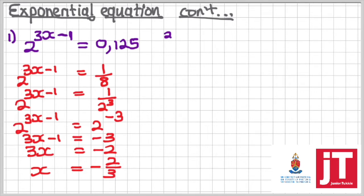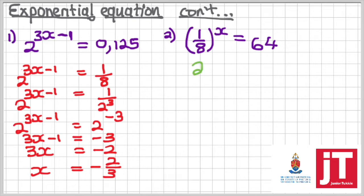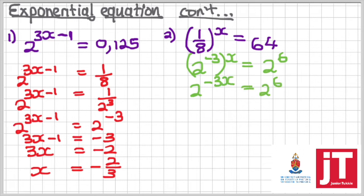We move on to the next question, where we are given 1 over 8 to the power x is equals to 64. Applying the same concept of converting a fraction into its prime form, we're going to get 2 to the power negative 3, all that to the power x, and the 64 can be written as 2 to the power 6. Simplifying or removing the brackets on the left-hand side, we're going to get 2 to the power negative 3x is equals to 2 to the power 6.